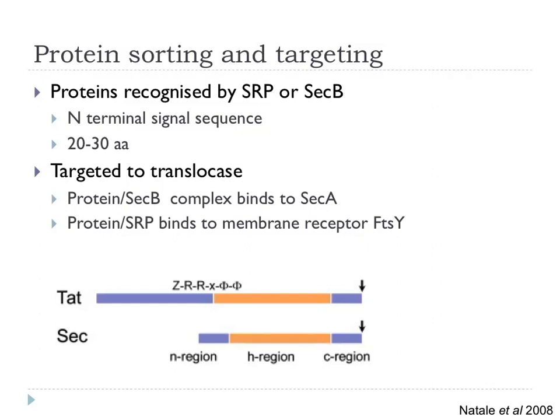Proteins are recognized by something called SRP, Signal Recognition Particle, or SecB as it's called in bacteria, recognizing this N-terminal signal sequence of 20 to 30 amino acids, sometimes even shorter — maybe down to 12 to 15. This is targeted to the translocase: the SecB complex binds to SecA, while the SRP complex binds to a different receptor, FtsY.